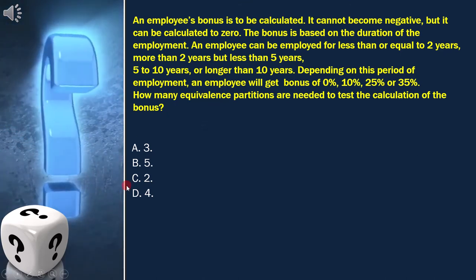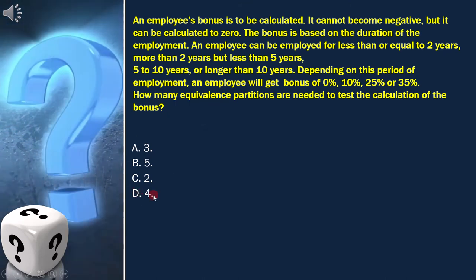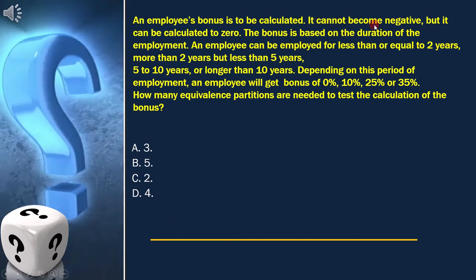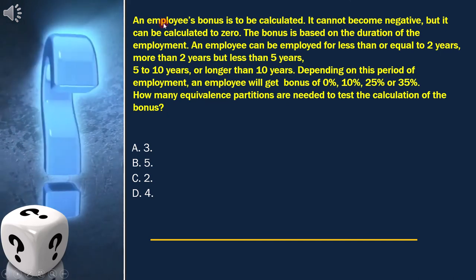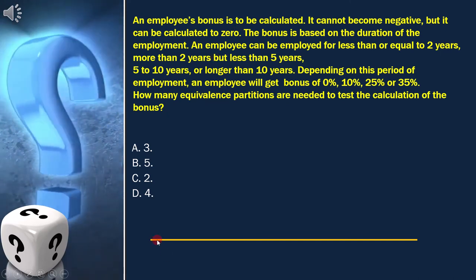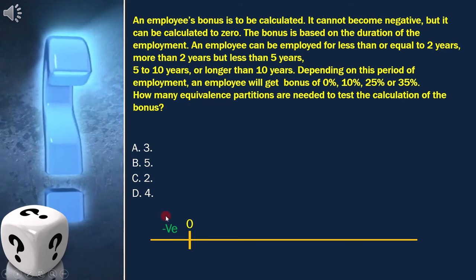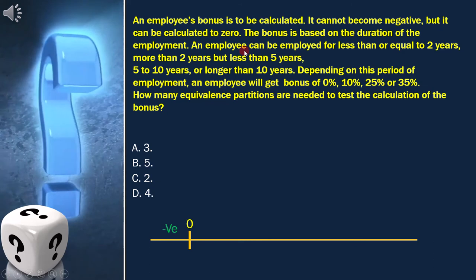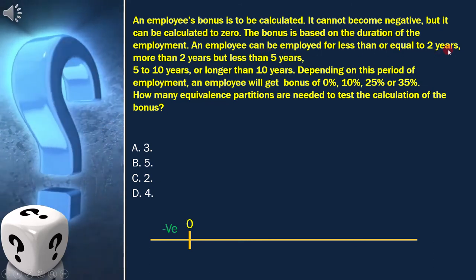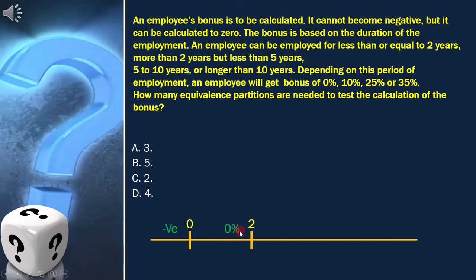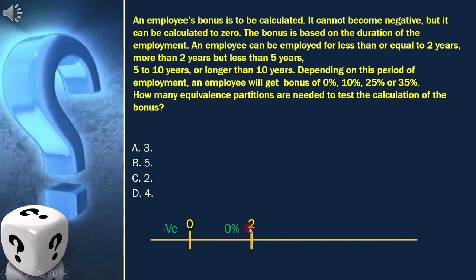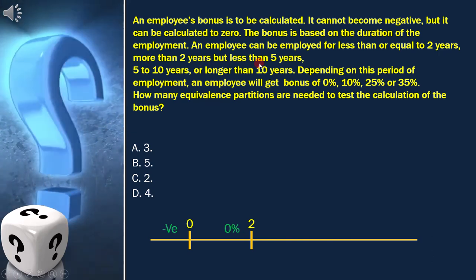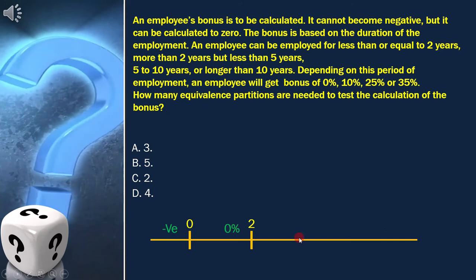Let's draw the equivalence classes diagram to get the answer. As per the question, it cannot become negative but it can be calculated to zero — that means zero is one of the boundaries. The next condition is an employee can be employed for less than or equal to two years, which means two is one of the boundaries. Next, more than two years but less than five years — with this we get five as one of the boundaries.